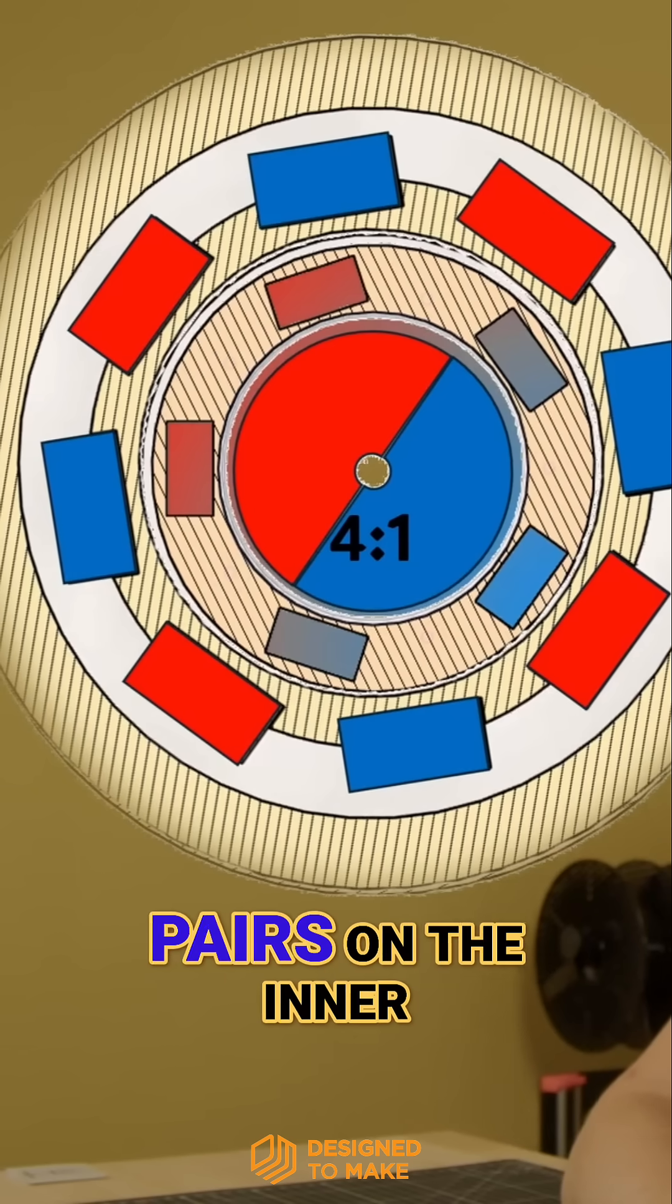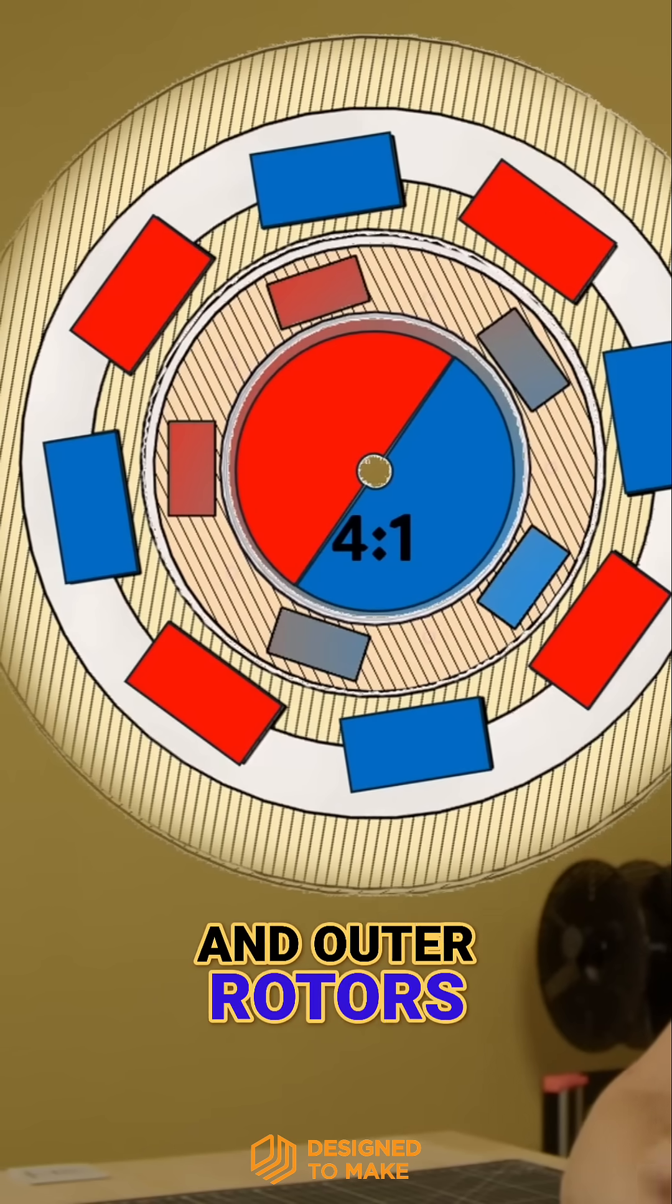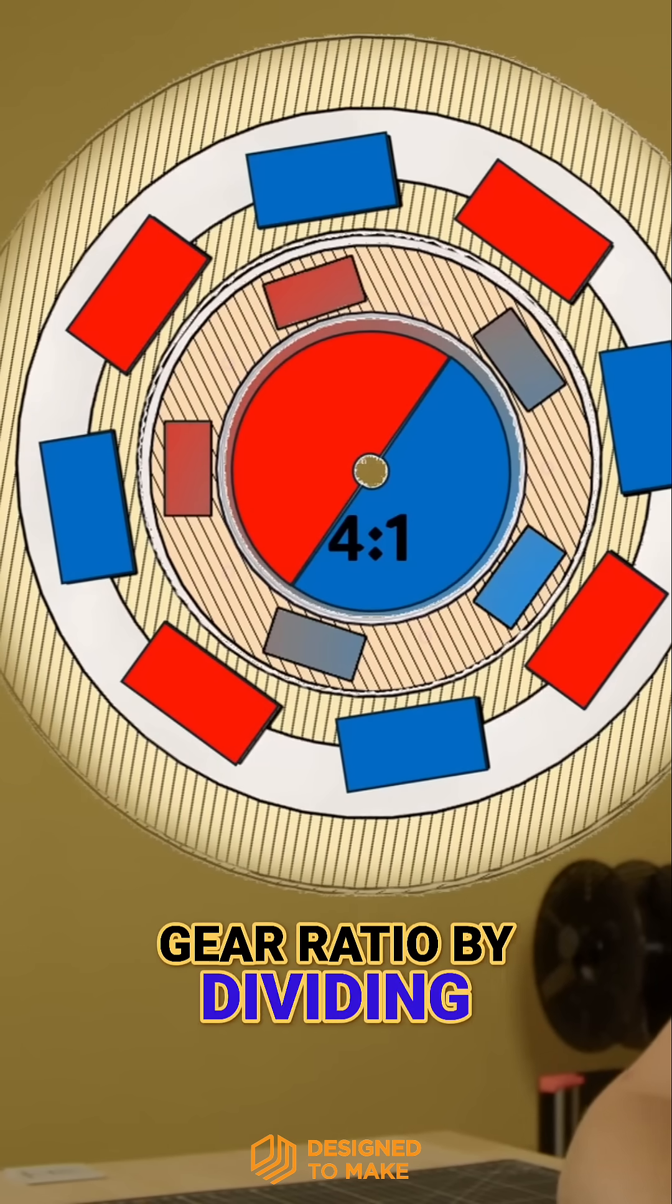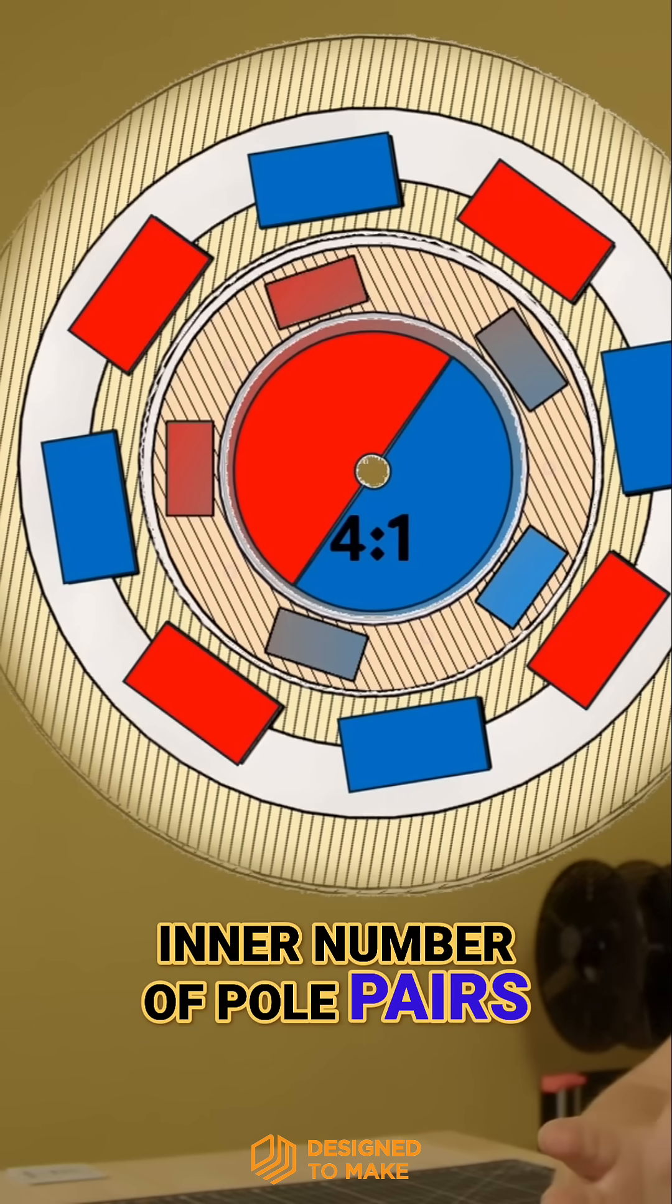By changing the number of magnetic pole pairs on the inner and outer rotors, you can adjust the gear ratio by dividing the outer number of pole pairs by the inner number of pole pairs.